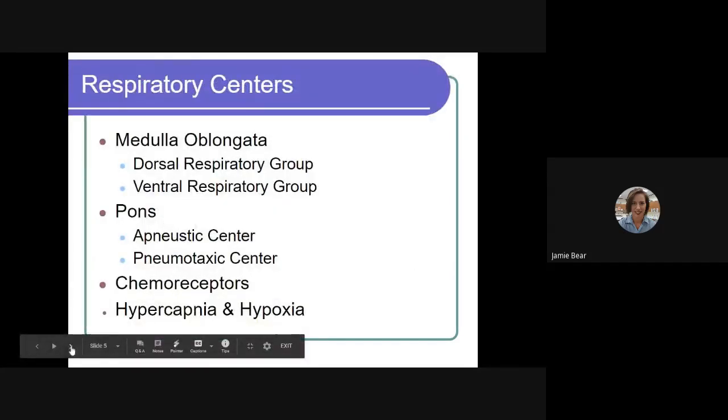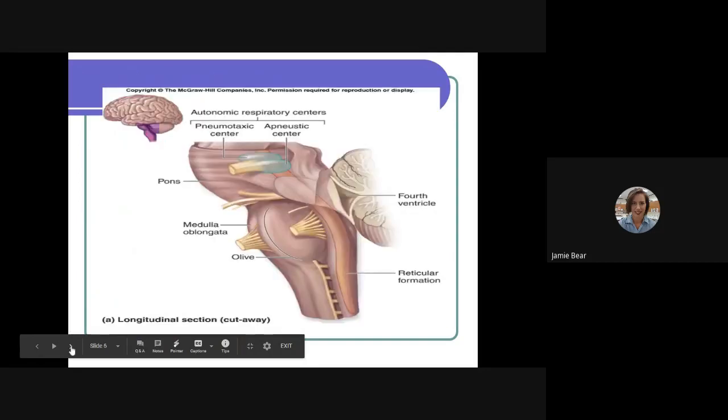Now let's look at some of the respiratory centers of our brain. The main areas of our brain that have control over ventilation are both in the brain stem. The medulla oblongata has the dorsal and ventral respiratory group, and the pons has both the apneustic and the pneumotoxic group. We're also going to look at chemoreceptors, and we're going to look a little bit at hypercapnia and hypoxia.